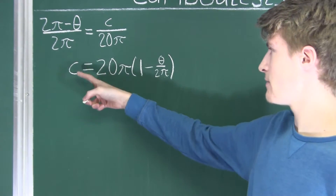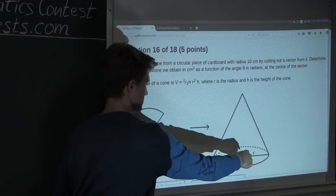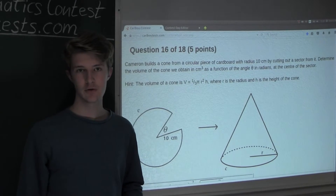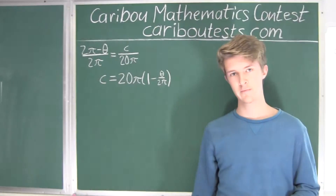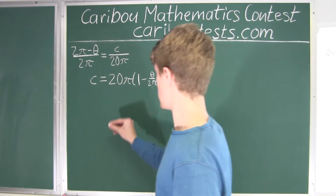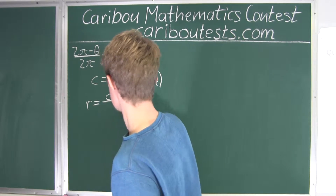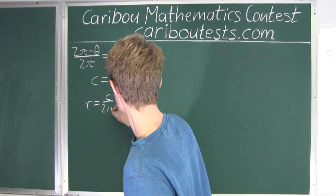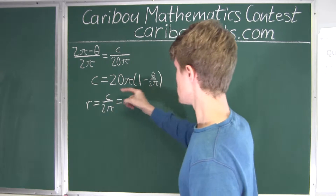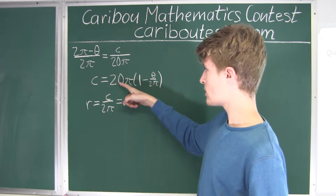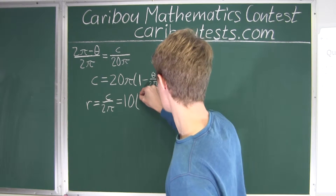Now we can find the radius of the base circle of the cone. To find the radius from the circumference, we divide by 2 pi, since circumference equals 2 pi r. So the radius R equals C divided by 2 pi, which is 20 pi times (1 minus theta over 2 pi) divided by 2 pi. Since 20 pi over 2 pi equals 10, we get R equals 10 times (1 minus theta over 2 pi).